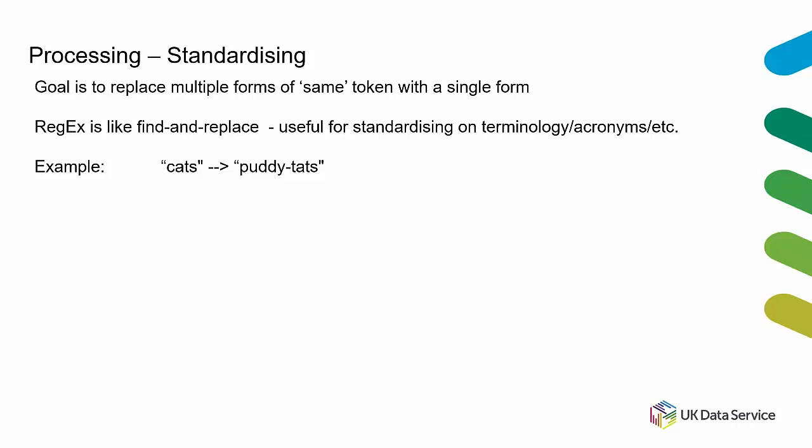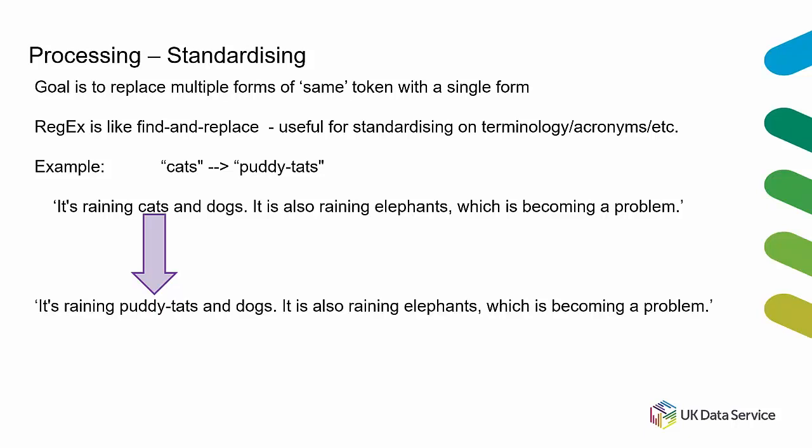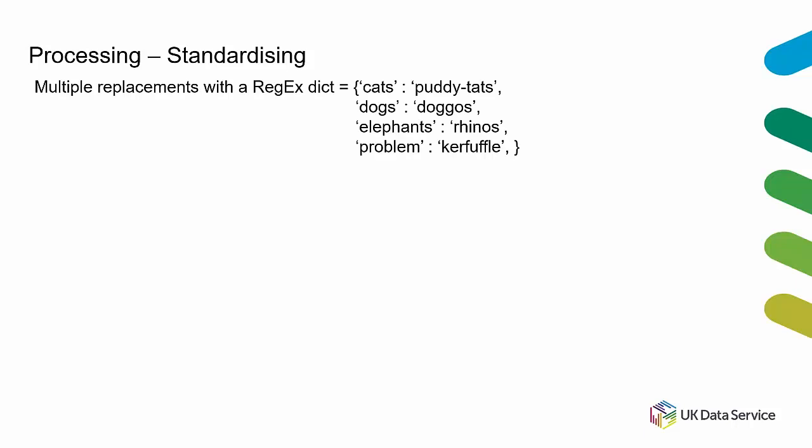RegEx is useful for standardizing terminology or acronyms. For example, if you know your text contains both 'cats' and 'puritans' and you want to standardize on one, you can run a RegEx operation to replace one with the other so they match and are counted together. You can run multiple such operations at once — for example, replacing cats with puritans, dogs with doggos, elephants with rhinos, and problem with kerfuffle — all in a single operation.